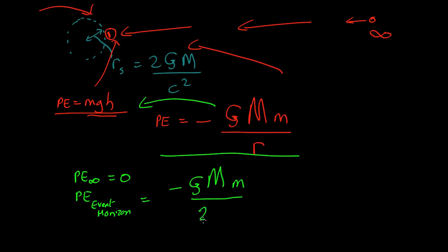Which is 2GM of the black hole over c squared. So that is equal to G's cancel, the mass of the black hole cancels. It's just mc squared over 2.